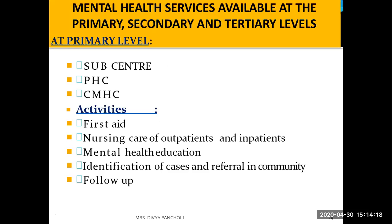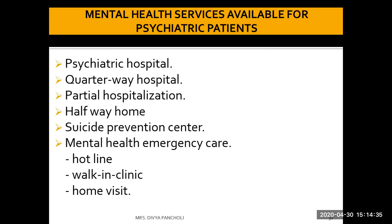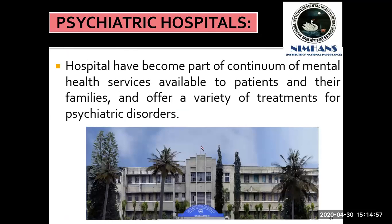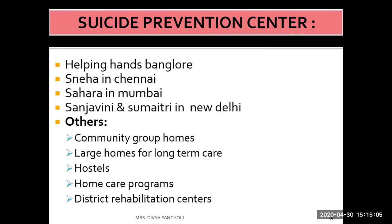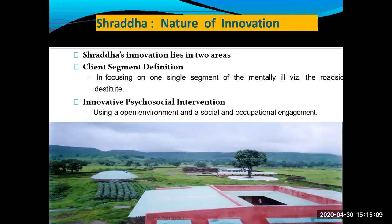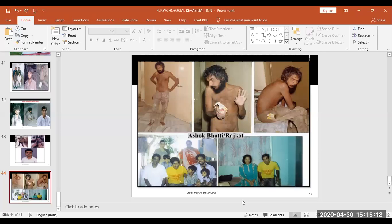Mental health services are available at primary, secondary, and tertiary levels. At the tertiary level, rehabilitation services are provided through psychiatric hospitals, quarter-way homes, partial hospitalization, halfway homes, suicide prevention centers, and emergency mental health care such as hotline clinics, walk-in clinics, and home visits. Examples already discussed include Vandrevala Foundation and Snehi. These are all services available for psychiatric patients in the community.